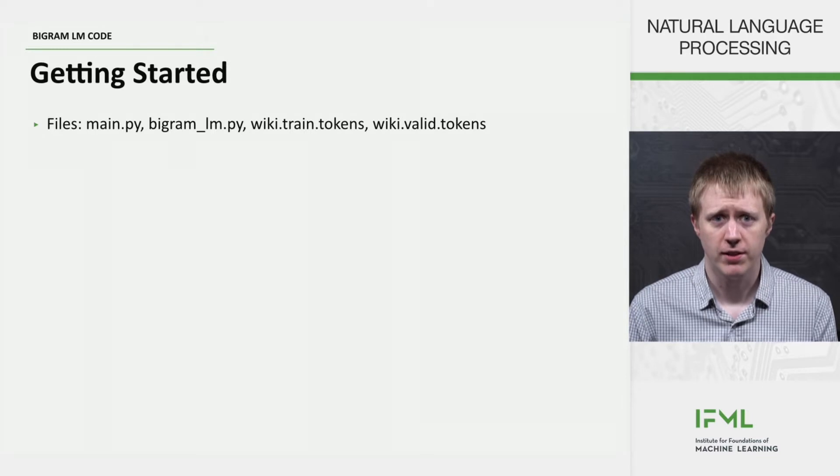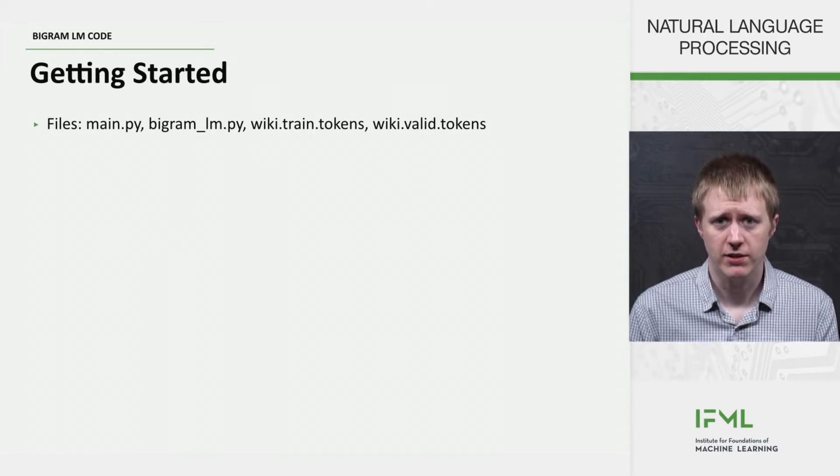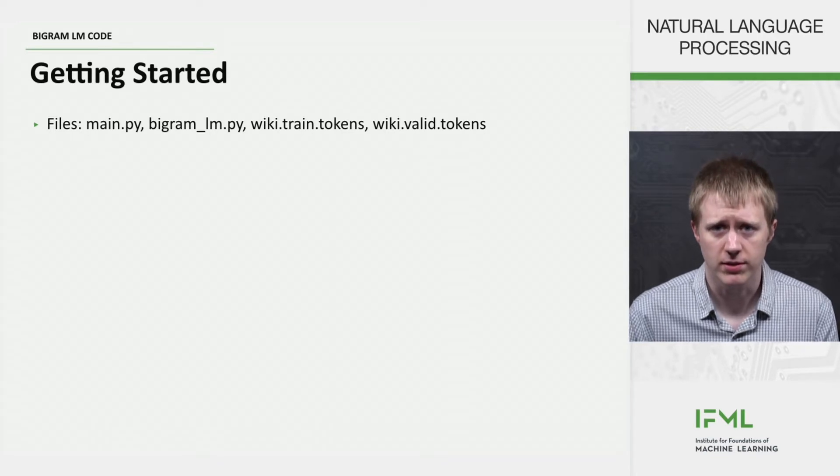So you're given four files: main.py, bigramlm.py, wiki.train.tokens, and wiki.valid.tokens.